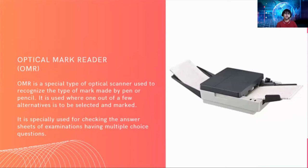We also have the Optical Mark Reader, or OMR. OMR is a special type of optical scanner used to recognize the type of mark made by pen or pencil. It is used where one out of a few alternatives is to be selected and marked. It is specially used for checking answer sheets of examinations having multiple choice questions.